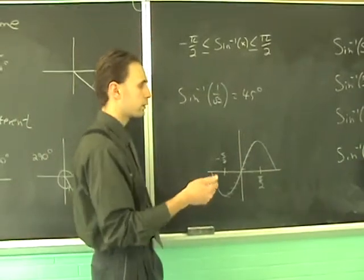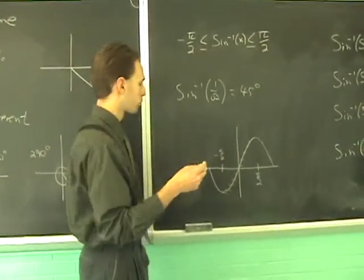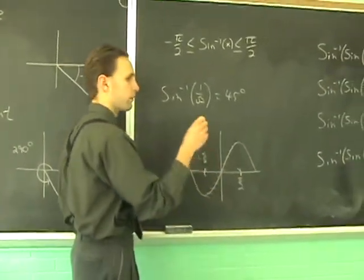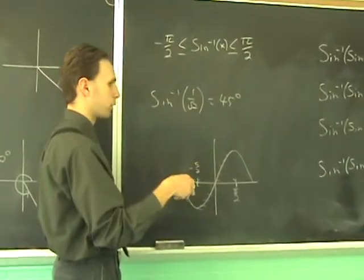Hence, when you take the inverse sine of something, the angle that it's going to give you will be the angle that's inside of this region that had the sine of the ratio that you put in.